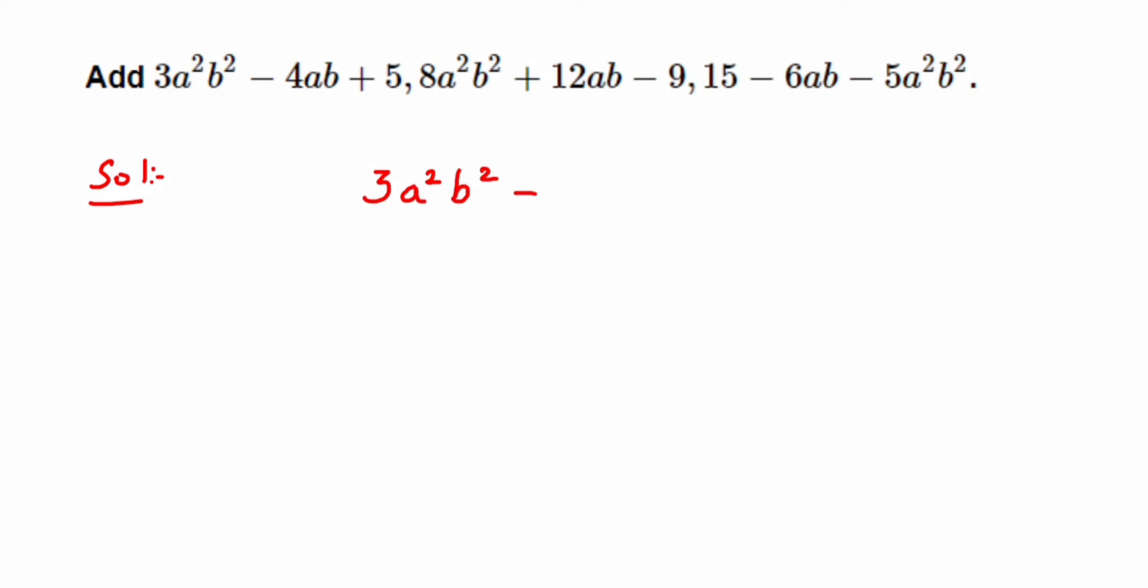The first expression is 3a²b² - 4ab + 5. When writing the second expression, you have to write the like terms below the like terms.